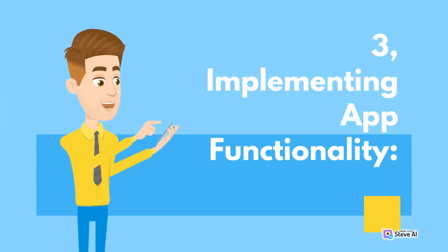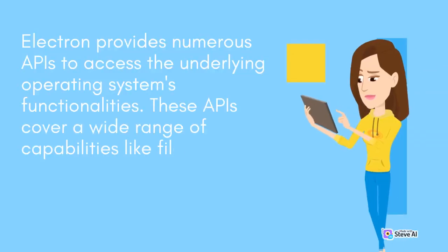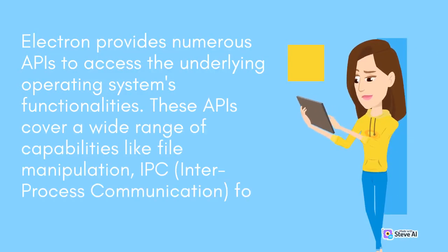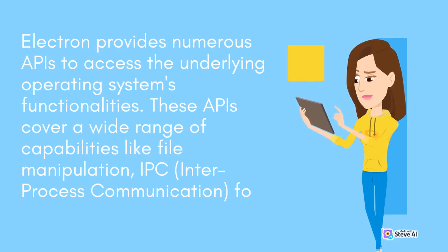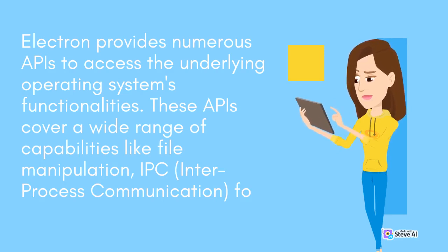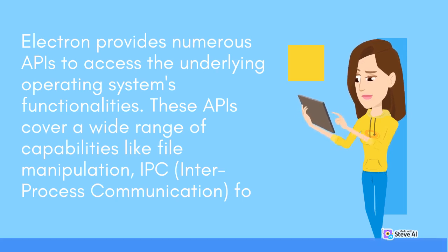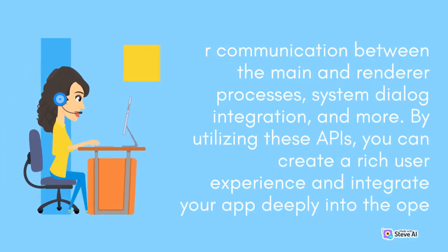Implementing app functionality: Electron provides numerous APIs to access the underlying operating system's functionalities. These APIs cover a wide range of capabilities like file manipulation, IPC (Inter-Process Communication) for communication between the main and renderer processes, system dialog integration, and more.